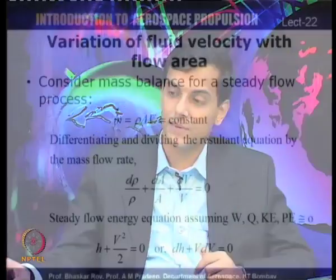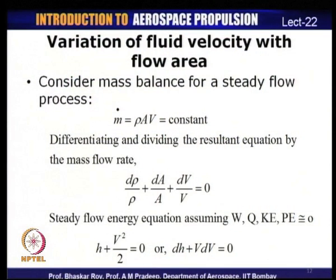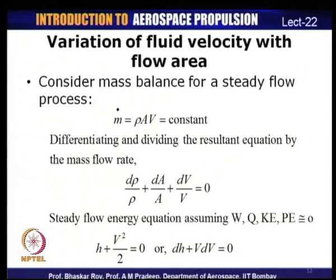For different Mach numbers, we can see how area and velocities are related. To derive an expression, consider a mass balance for a steady flow process. Mass flow rate equals ρAV = constant for steady flow. Differentiating and dividing by mass flow rate: dρ/ρ + dA/A + dV/V = 0.